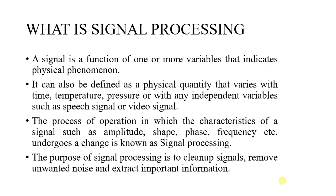one or more variables that indicates physical phenomena. It can also be defined as a physical quantity that varies with time, temperature, pressure, or any independent variable such as speed signal or video signal. The process of operation in which the characteristics of a signal such as amplitude, shape, phase, frequency, etc. undergoes a change is known as signal processing. The purpose of signal processing is to clean up signals, remove unwanted noise, and extract important information.